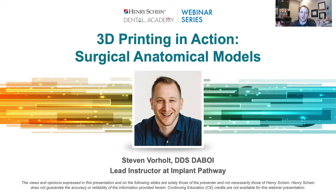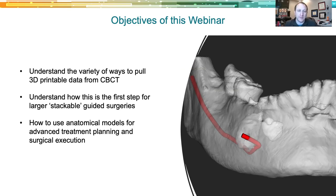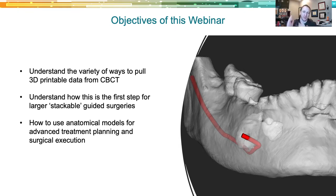It's titled '3D Printing in Action: Surgical Anatomical Models.' We're going to be talking about the different ways that we can use our 3D printer to help us in larger surgeries, and the more clever or adjunctive uses outside the normal scope of printing a surgical guide or a night guard.